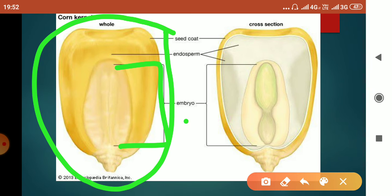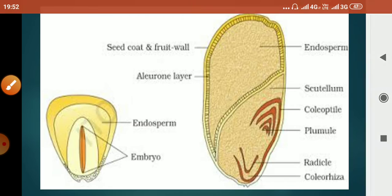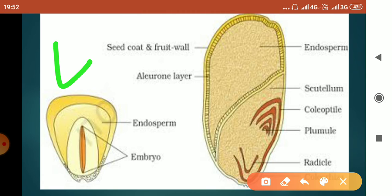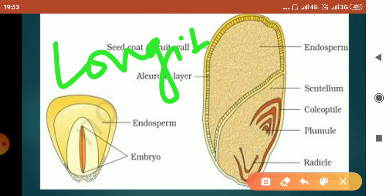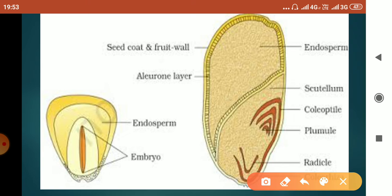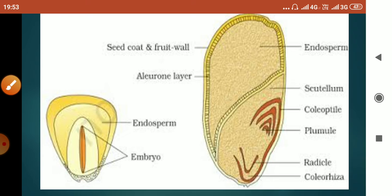Here you can see a corn kernel, that is a maize grain. The whitish area represents the embryo. This is a cross section. Now here we are going to study about the internal structure of a maize grain using a longitudinal section — meaning it is cut lengthwise — and we will observe the various structures present.